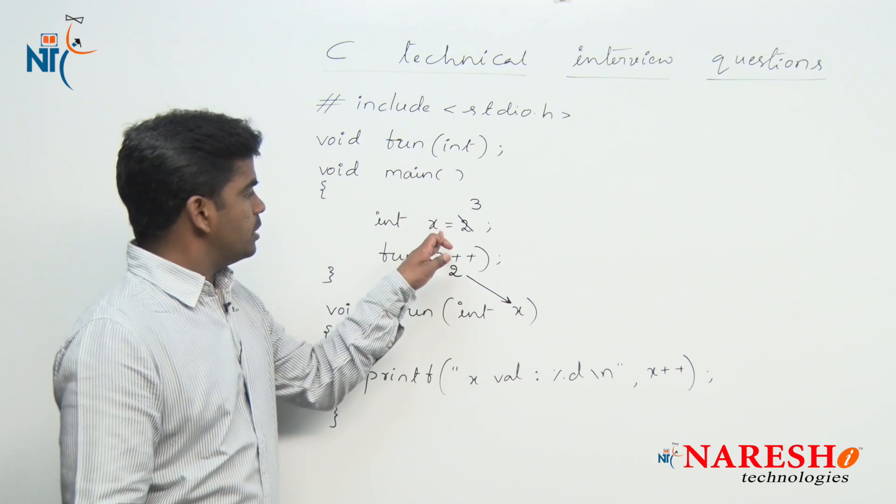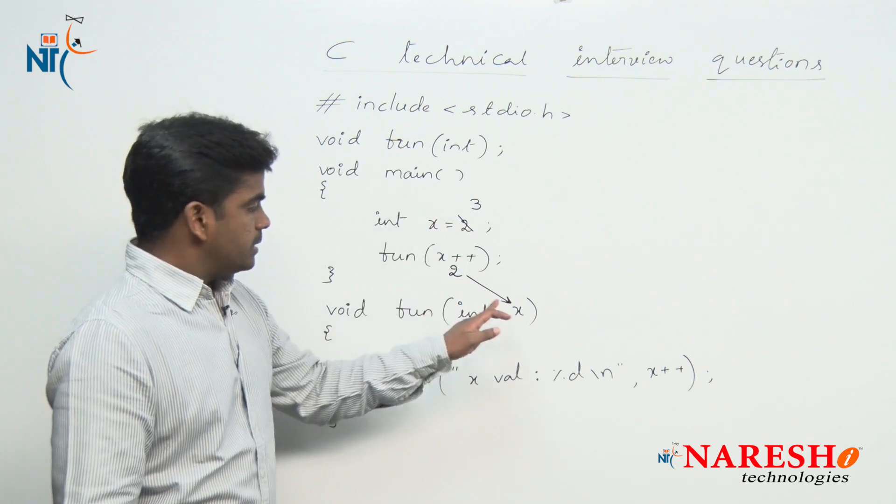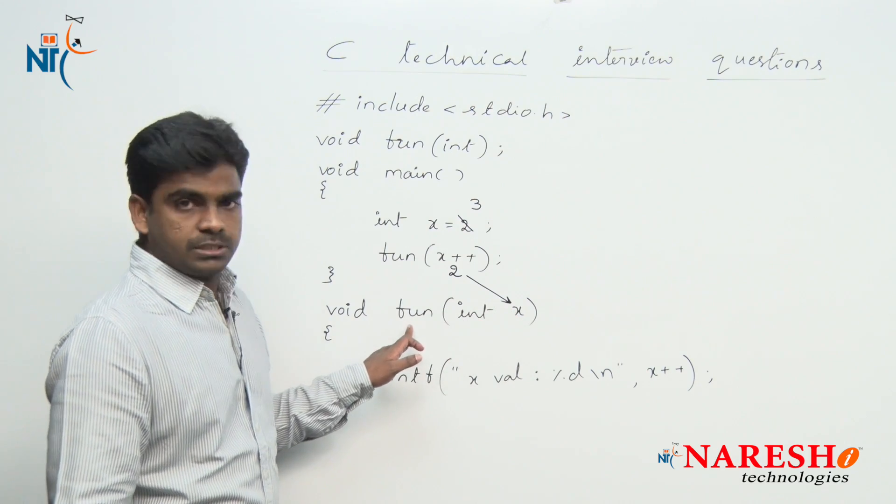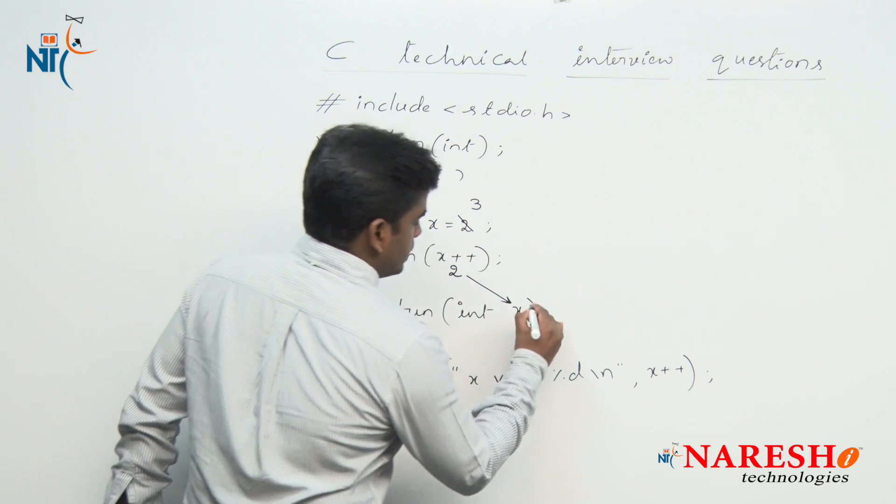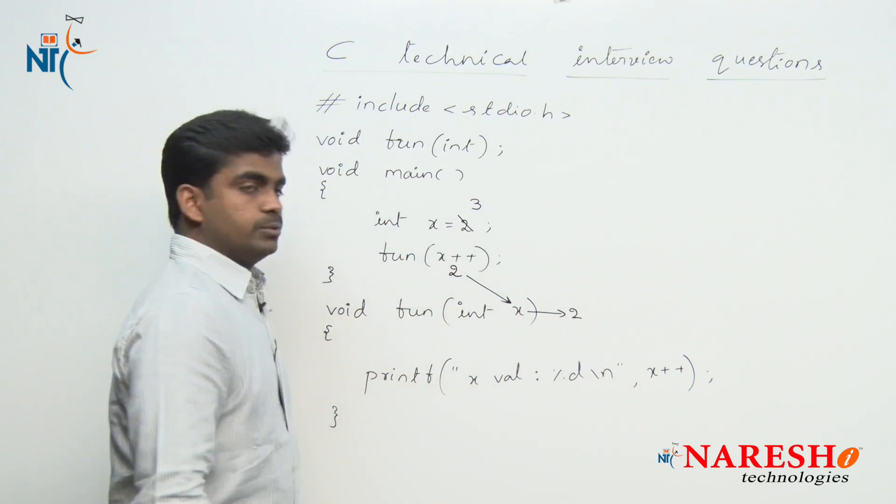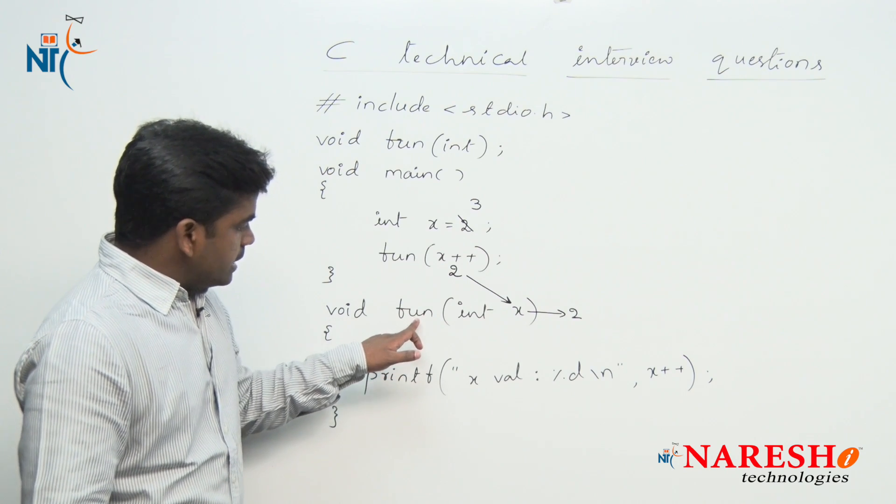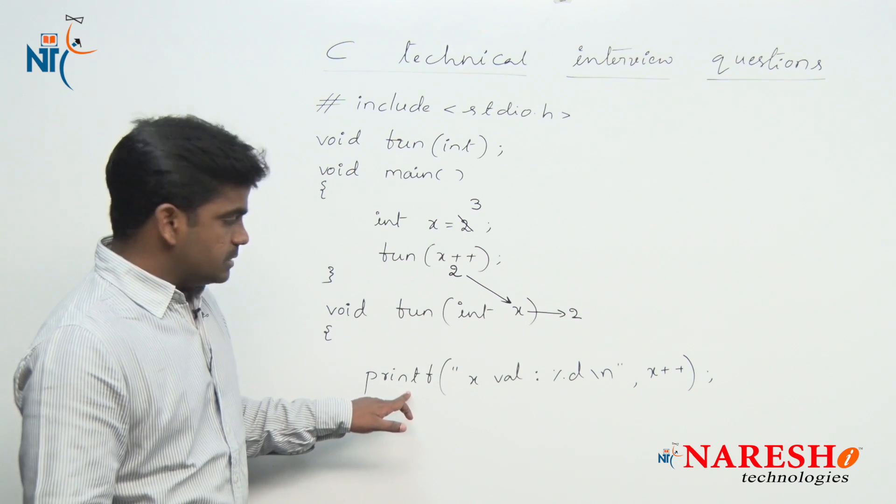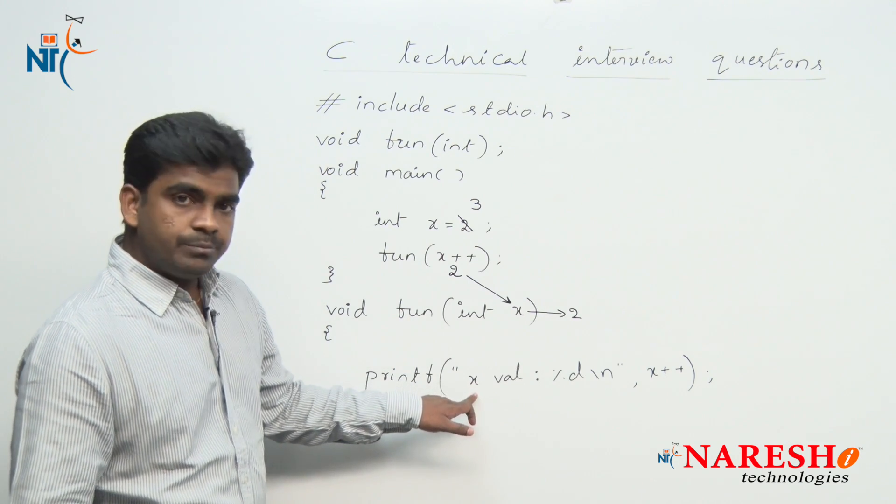Remember this x and this x both are different. This is local variable for main function and this is local variable for fun function. Here x value is 2.